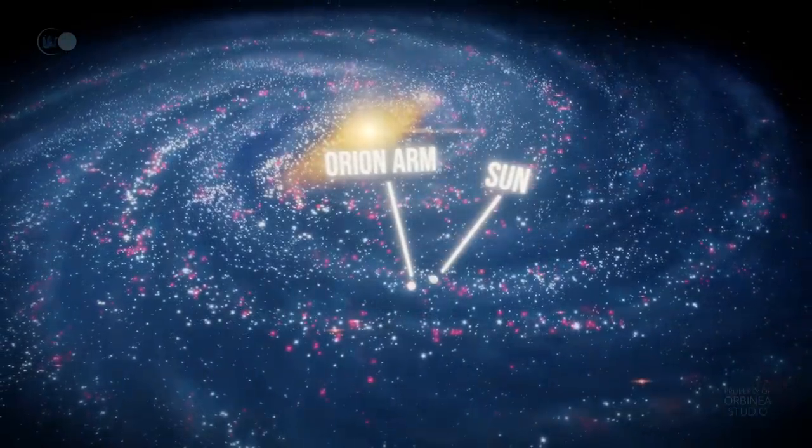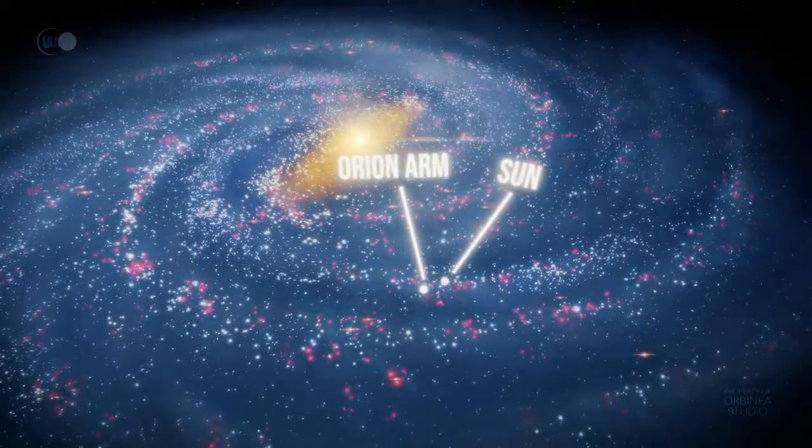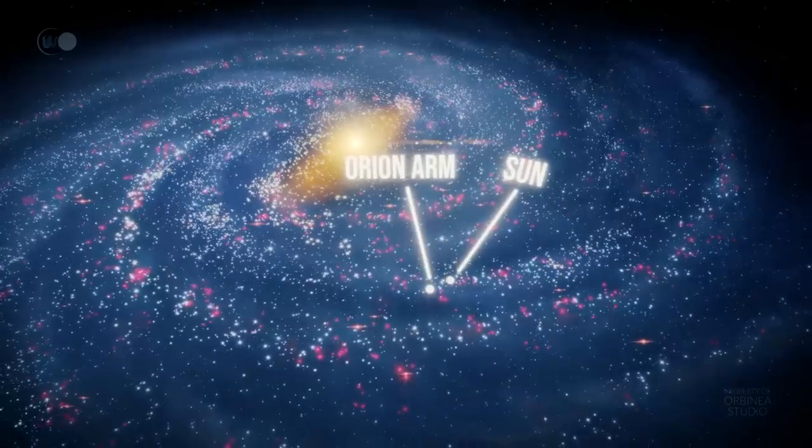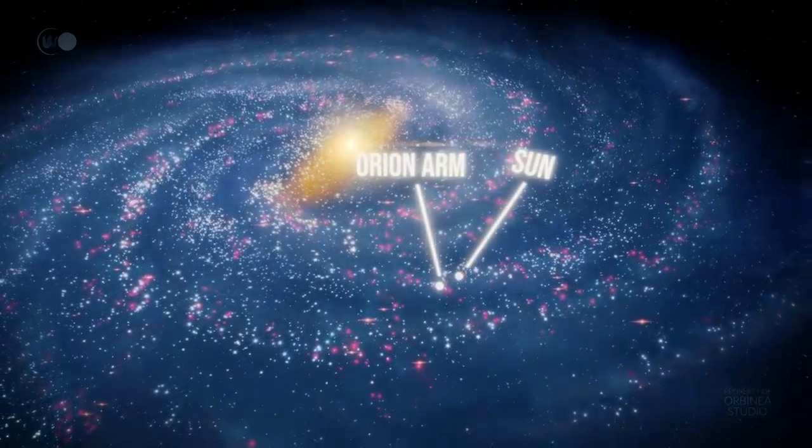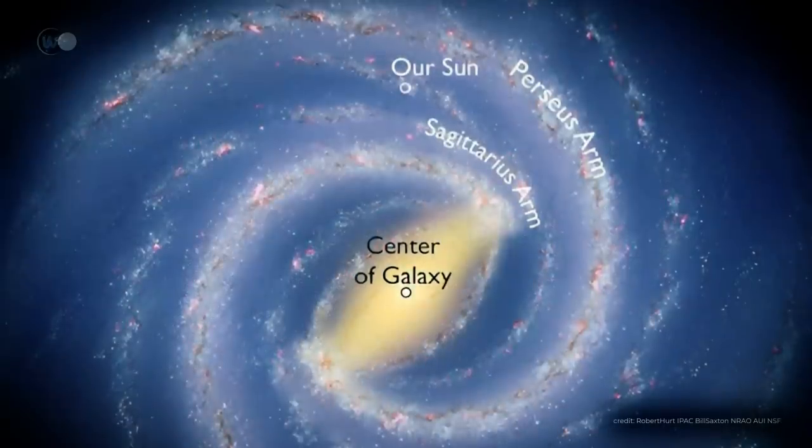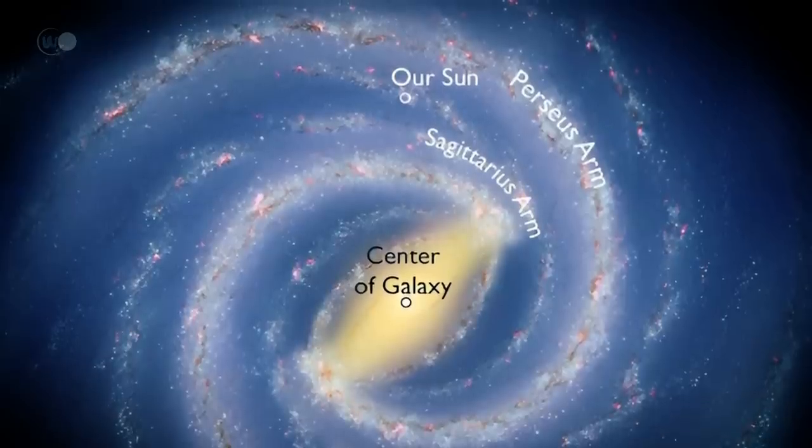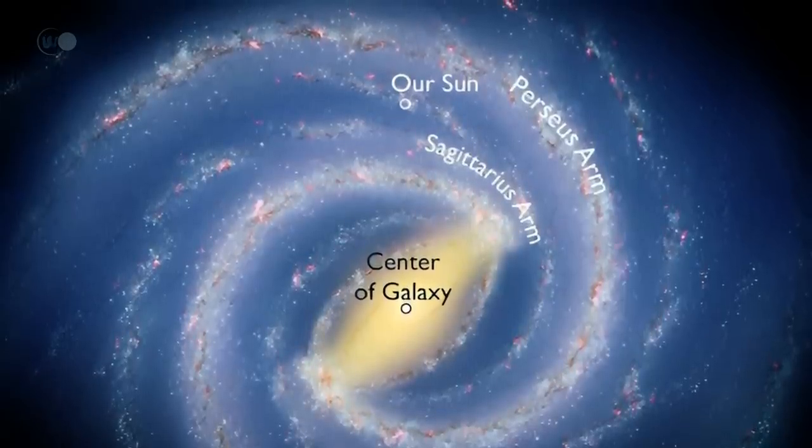Our solar system is nestled in one of the galaxy's spiral arms, the Orion Arm, also known as the Local Arm, where it lies midway between the edge and center of the Milky Way. This arm extends outwards from the Sagittarius Arm, one of the four major arms of our galaxy. However, this mapping of the galaxy could well be called into question.